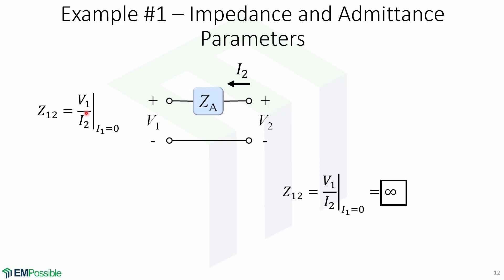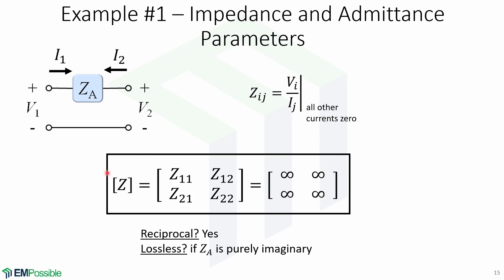The same goes for Z12, which we obtain by dividing V1 over I2 when I1 equals 0. I2 is also 0 because the circuit is open, which means Z12 equals infinity. Similarly for Z21: since the circuit is open, I2 equals 0, so Z21 equals infinity. And Z22 will also be infinity. Here we have our complete impedance matrix Z with all elements equal to infinity.